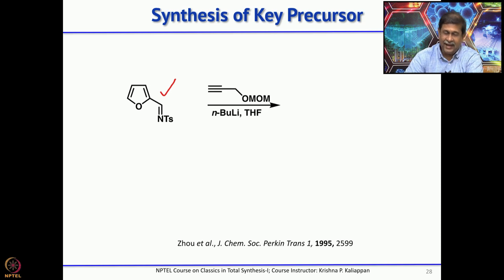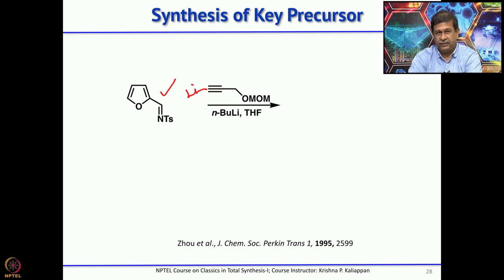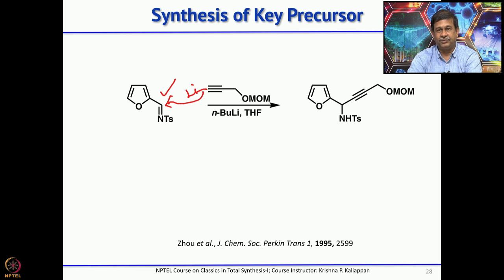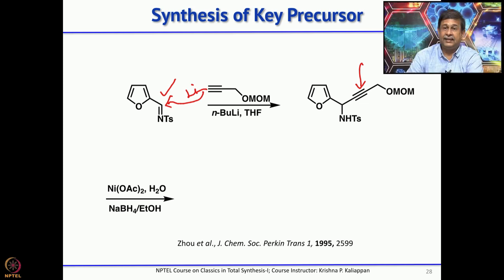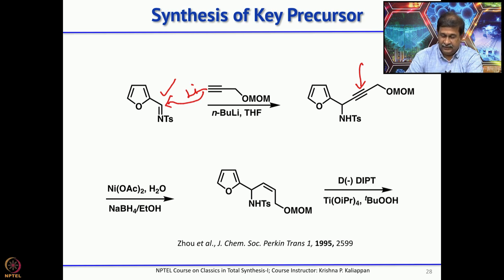You then add the lithium derivative derived from MOM-protected propargyl alcohol. Treating MOM-protected propargyl alcohol with butyllithium gives the lithium species that adds to the imine to give the adduct. You now have a triple bond, which can be reduced to get a cis double bond. This was done with a mixture of nickel acetate and sodium borohydride to get the cis alkene. Then comes the key reaction: kinetic resolution.